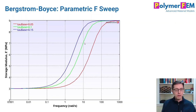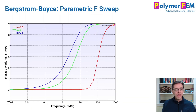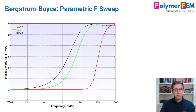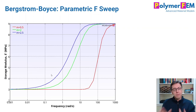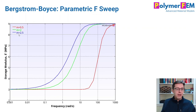The M parameter changes the slope of the central region of storage modulus versus frequency. Remember, the BB model has two networks, but nothing prevents you from using three or four networks to widen the peak region if the experimental data requires a specific broadening that can't be achieved with a two-parameter BB model.